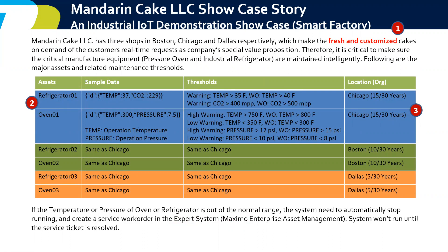The two key assets are the oven and the refrigerator. The oven is used to make the cake, and the refrigerator is used to store the cake. The parameters of the oven are temperature and pressure. The refrigerator parameters are temperature and carbon dioxide — carbon dioxide here indicates the fresh air quality inside the refrigerator. This is a real enterprise solution across three different locations: Chicago factory, Boston factory, and Dallas factory. Chicago factory has a 15-year history, so its assets are 15 years old with a design life of 30 years. Boston is 10 years and Dallas is 5 years.